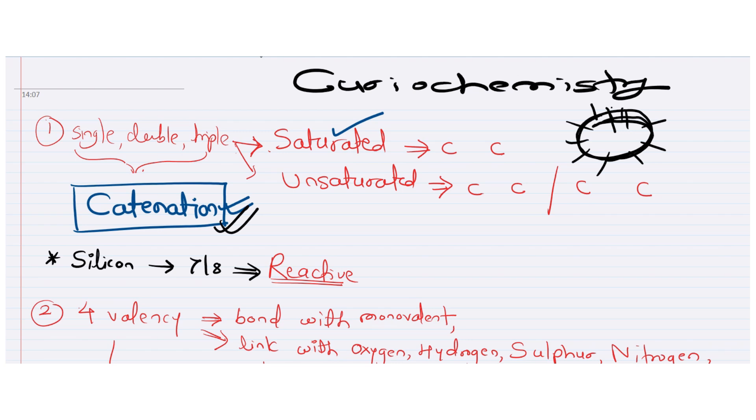So by this property, we are getting two types of compounds. Here, first one is saturated compound. What is saturated compound now? Where carbon and carbon connected with single bond. That time you have to say these are saturated carbon compounds when a single bond is there.